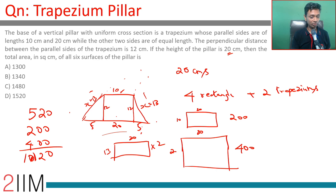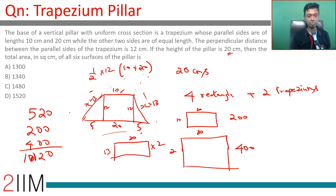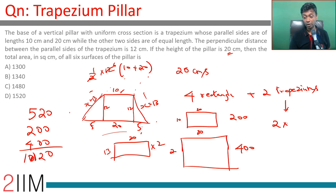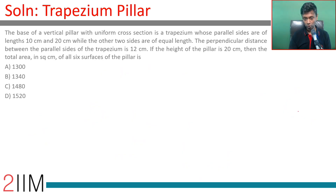We still need to account for the two trapeziums. The area of one trapezium is half times 12 times (10 plus 20). That is half times 12 times 30, which equals 180. Two trapeziums give 2 times 180, which is 360.